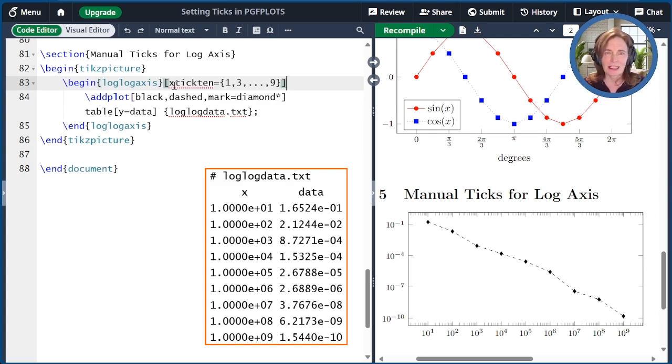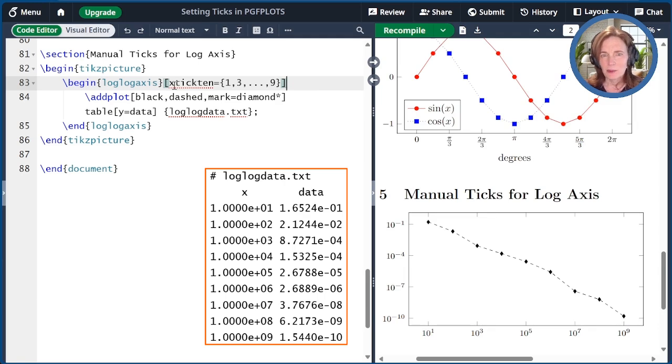Let me paste that here. Here I set x tick 10 equal 1, 3, dot, dot, dot, 9. When I recompile this, now we see that it's picked out those x ticks on the logarithmic axis.